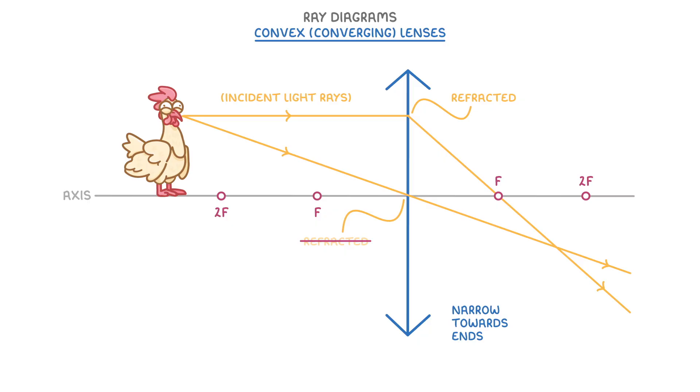And now that we've drawn all of the rays, we just need to find the spot where they cross, which is down here. So this is the beak of our chicken. And we draw it in again.